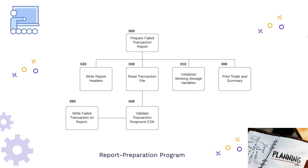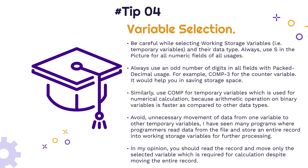Tip number four: careful selection of variables. Be careful while selecting working storage variables and their data type. Always use 'S' in the picture clause for numeric fields. Always use an odd number of digits for COMP-3 variables — never even numbers. Use COMP for temporary variables predominantly used for calculation purposes. Also, avoid unnecessary movement of data from one variable to another. Only move those fields actually required for calculation, rather than moving the entire record to a working storage variable and back.